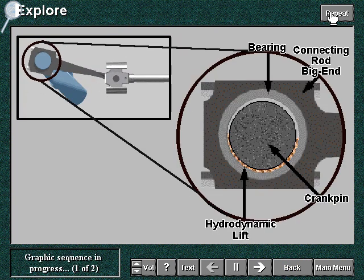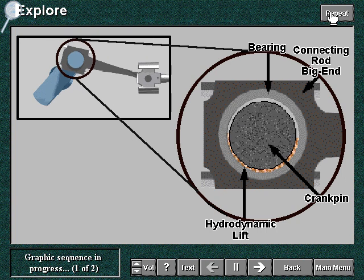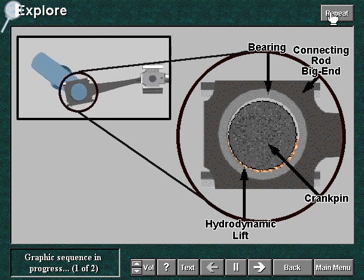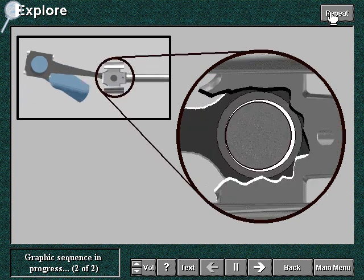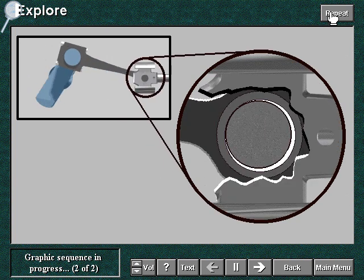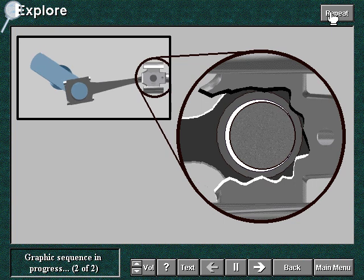In main and big end bearings, the pin always makes a complete revolution. This allows hydrodynamic lift to take place. In small end bearings, however, the crosshead pin only makes oscillations. The lack of complete rotation makes the conditions less favorable for hydrodynamic lift.